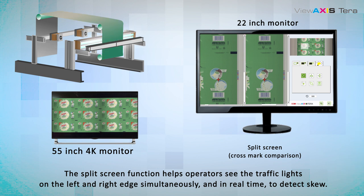The split-screen function helps operators see the traffic lights on the left and right edge simultaneously and in real-time to detect skew.